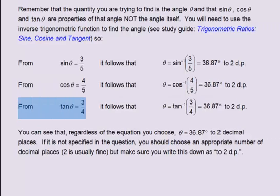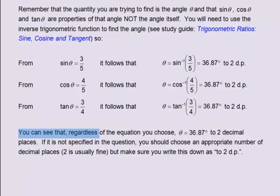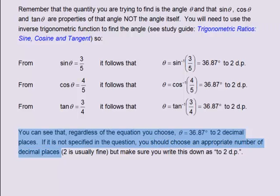From tangent theta equals 3 divided by 4, it follows that theta equals 36.87 degrees to two decimal places. You can see that, regardless of the equation you choose, theta equals 36.87 degrees to two decimal places. If it is not specified in the question, you should choose an appropriate number of decimal places — two is usually fine — but make sure you write this down as 'to two decimal places'.